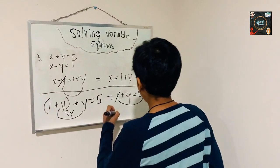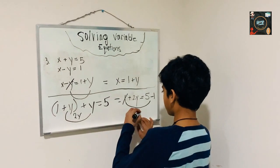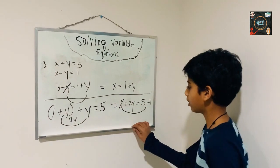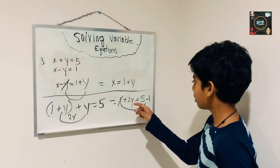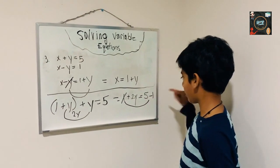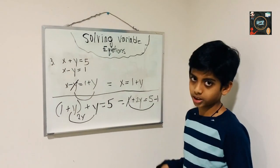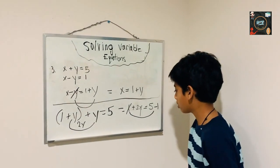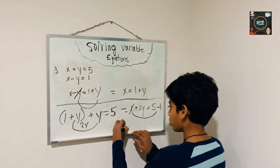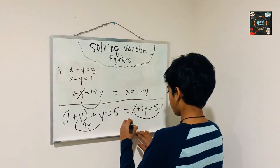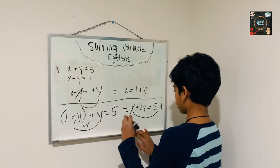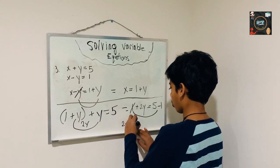That's our equation now. We have to solve for what 5 minus 1 is, which is 4. So our equation becomes 2y equals 4.